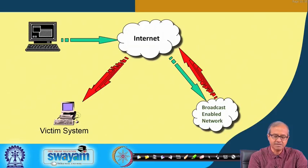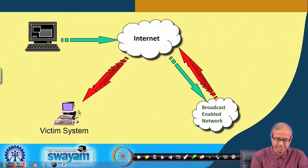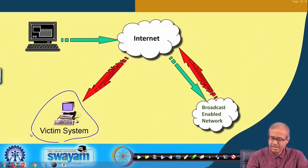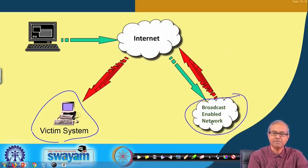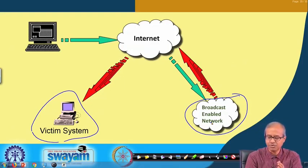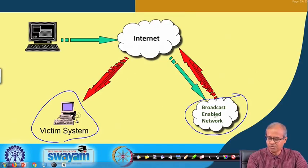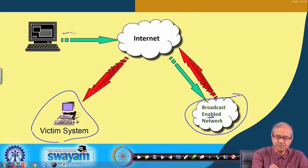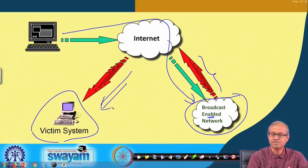This is another pictorial depiction: here we have the attacker and the victim system. This is a network that allows broadcast-enabled packets to come. If you want to stop this, your network can reject any incoming packet with broadcast address as the destination. But if it is a broadcast-enabled network, the attacker will send a packet here, and the broadcast-enabled network will generate a large number of packets — marked by red arrows — to this victim system.